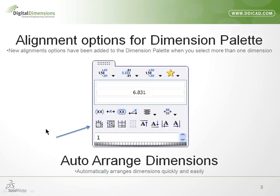The first item we're going to be looking at is new alignment options for the Dimension Palette. You might remember they added the Dimension Palette a few releases ago — it shows up next to your dimensions when you're working in a drawing. They've added a few new alignment options, and we're also going to look at auto-arrange as well. They've definitely improved the Dimension Palette so we don't have to spend as much time getting our drawings set. For those that still do lots of drawings, this will be a big help.